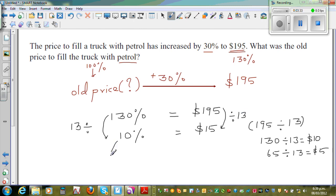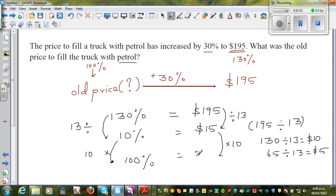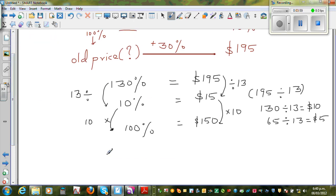Now from here, I want to get to 100%. So now you have to multiply. 10 times what is 100? 10 times 10 is 100. So you do the same thing to this - multiply this by 10. That is $150. So the old petrol price is $150. That's the answer.